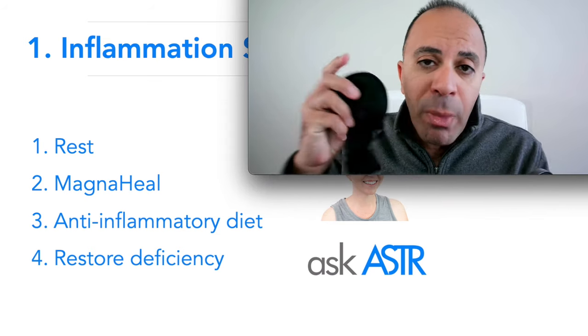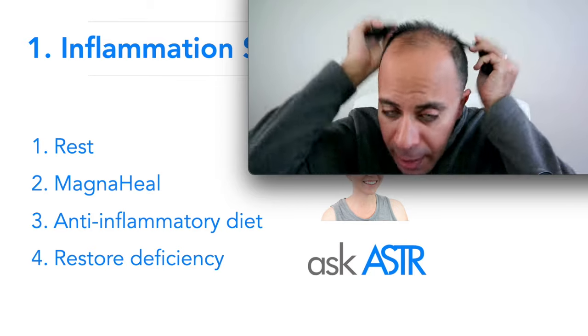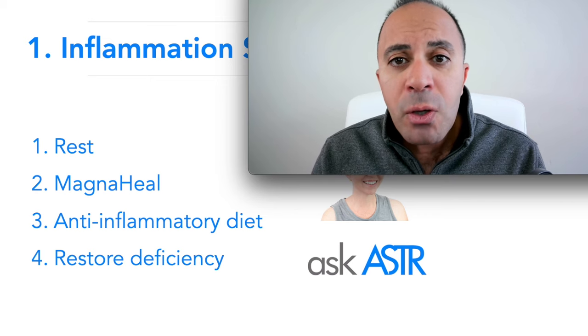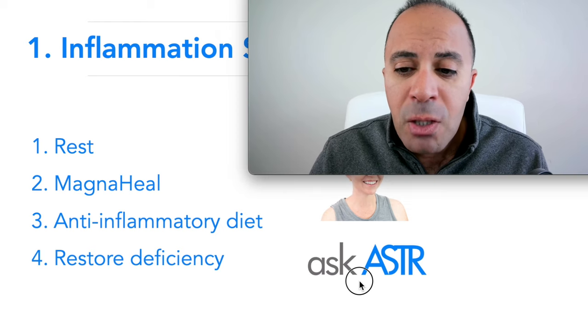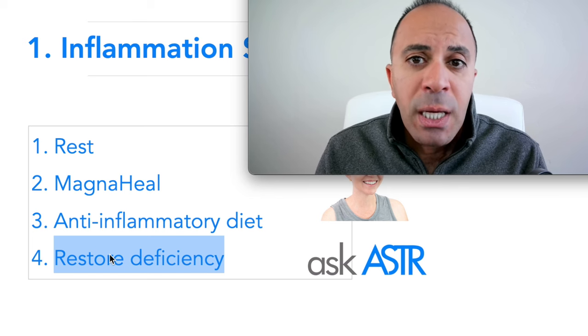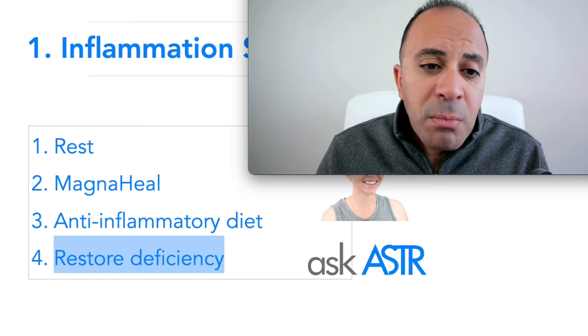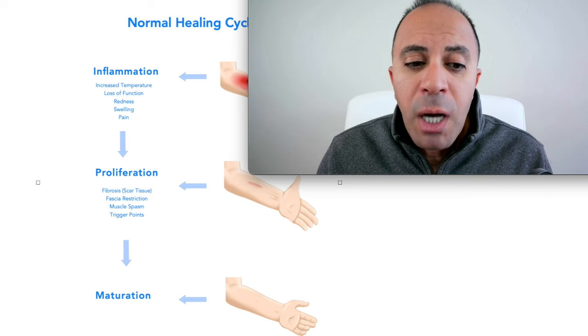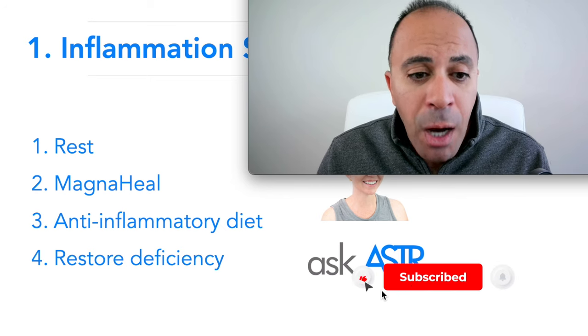For inflammation, I use the Magna Heal — a very strong magnet used on the neck area. Its magnetic field range is around three inches, so it can penetrate three inches into the body to decrease inflammation. I also put all my patients on an anti-inflammatory diet to make sure they're not eating foods that cause internal inflammation and slow the normal healing cycle. For chronic conditions like gout or diabetes, I recommend AskAster — a free online medical evaluation that takes about five minutes to identify possible vitamin and mineral deficiencies that may slow your healing.